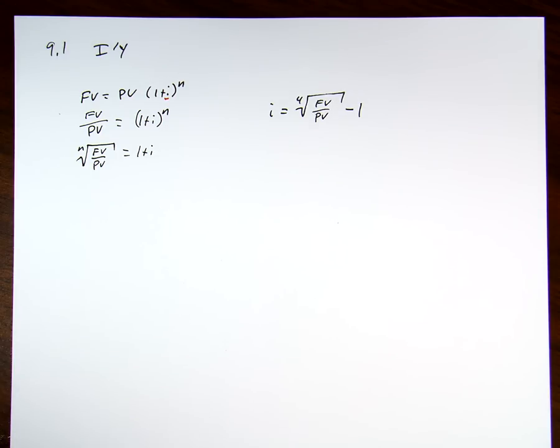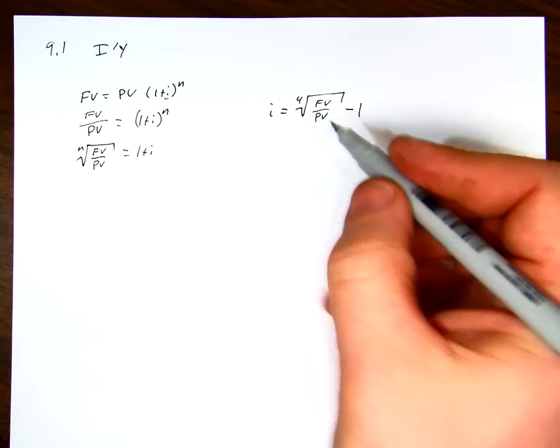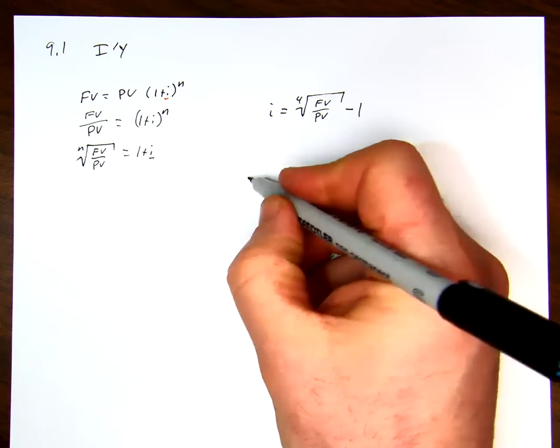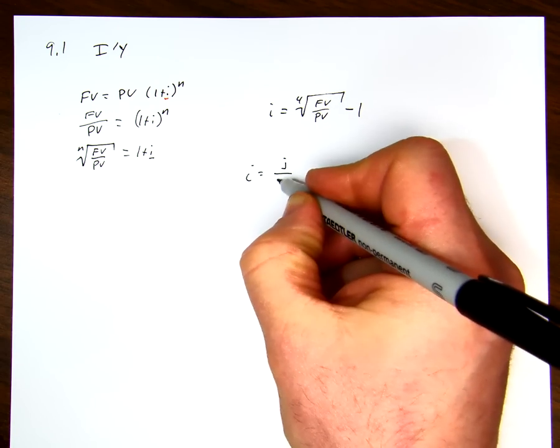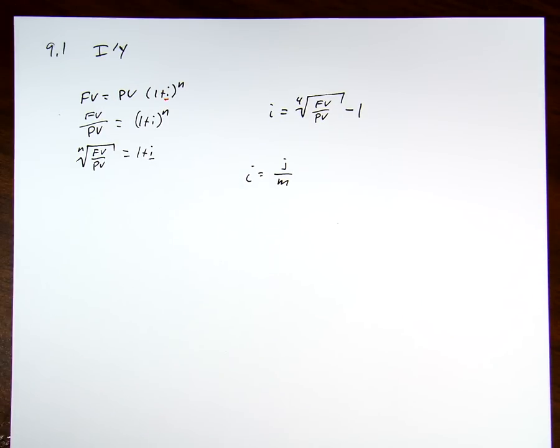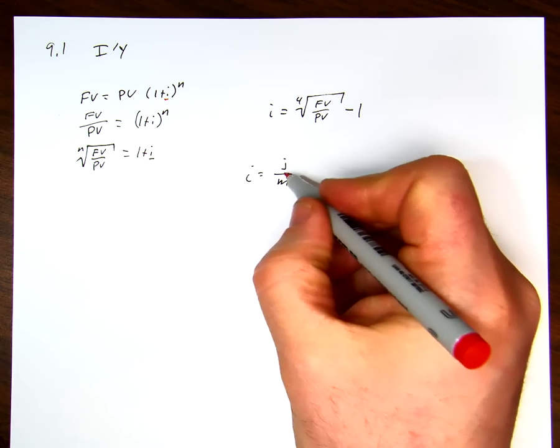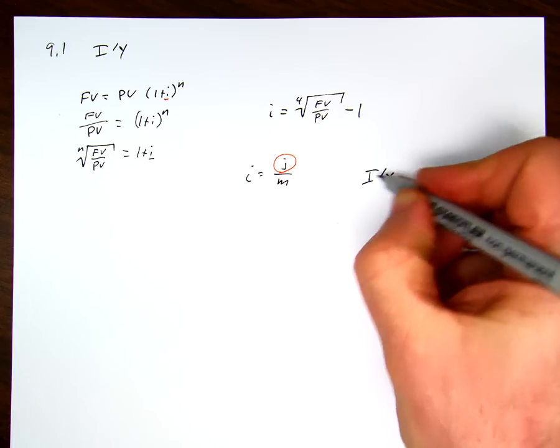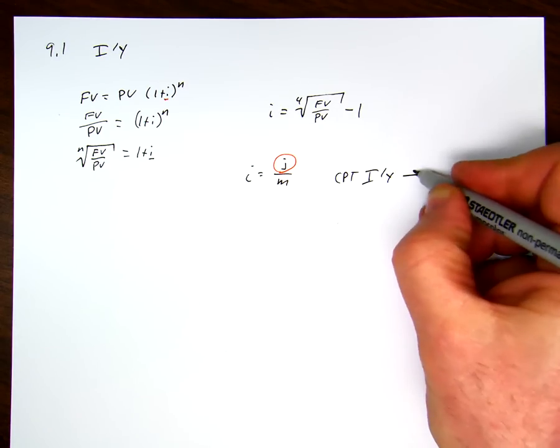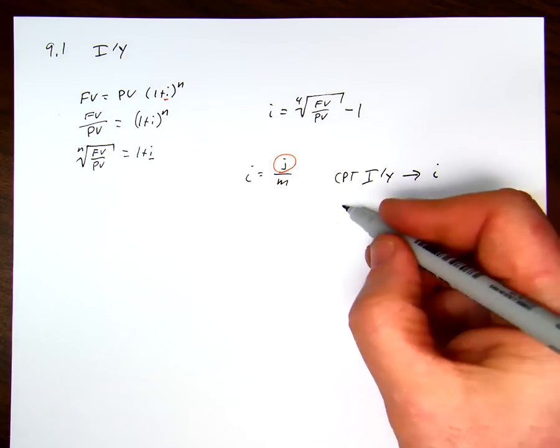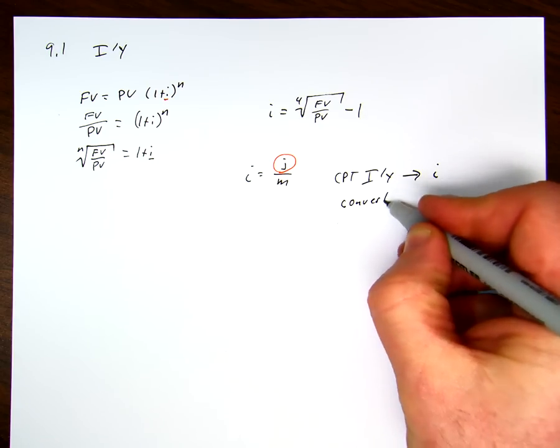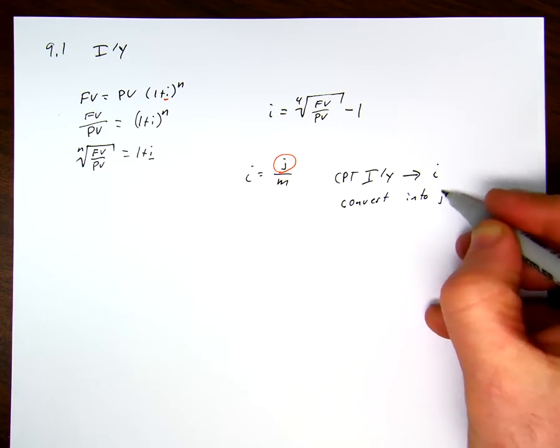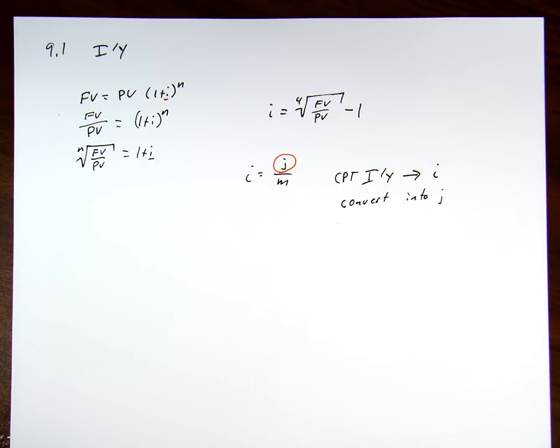But in most cases, we're probably going to use the calculator like we did before and just calculate i per y. So when we get the calculator, we notice that we're using i and we know that i is equal to j over m. The solution for our problem is probably going to be j. So we know that when we use i per y, the result that comes out is going to be i and then we need to convert that value into the nominal value j.